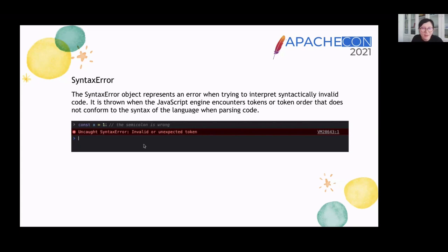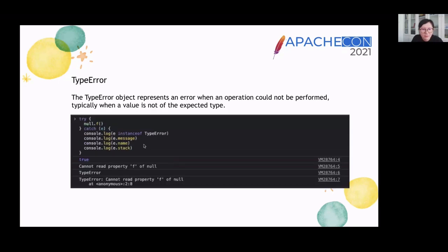SyntaxError: the SyntaxError object represents an error when trying to interpret syntactically invalid code. It is thrown when the JavaScript engine encounters tokens or a token order that does not conform to the syntax of the language when parsing code. By the way, try-catch is not able to capture SyntaxError. TypeError: the TypeError object represents an error when an operation could not be performed, typically when a value is not of the accepted type. For example, we cannot access property f of null.